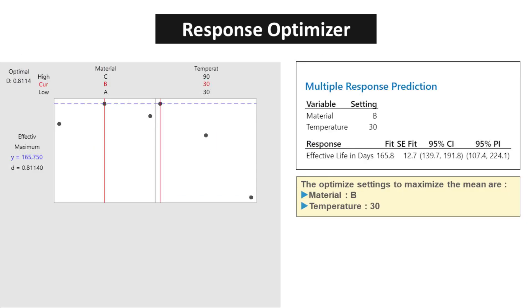Using the Response Optimizer, the optimized settings to maximize the mean are material B and temperature of 30 degrees Celsius. The fitted mean is 165.8.